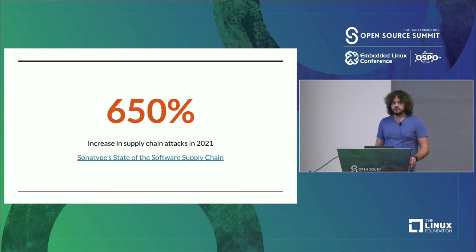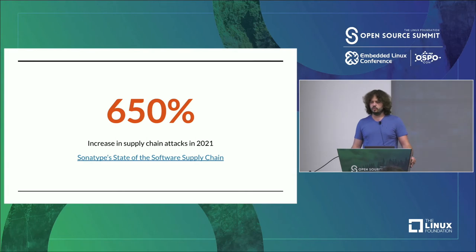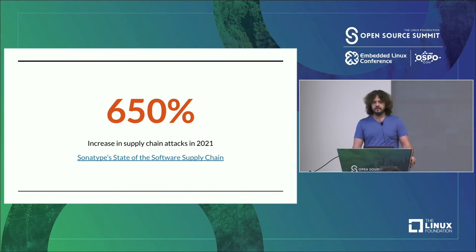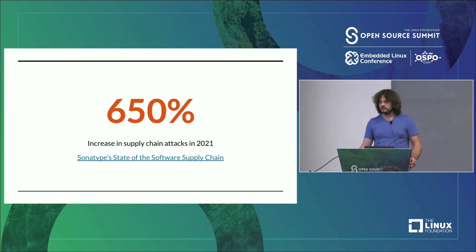Sonatype just put out their 2021 State of the Software Supply Chain Report showing a 650% increase in supply chain related attacks in 2021. The EU put out a report predicting a 400% rise next year. The numbers are all big, similar, and scary. It's a big problem.